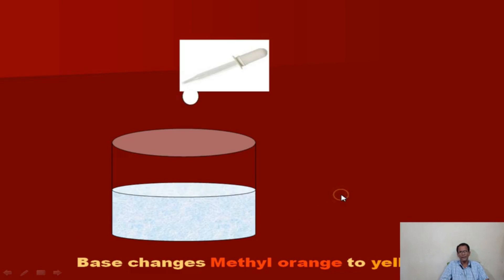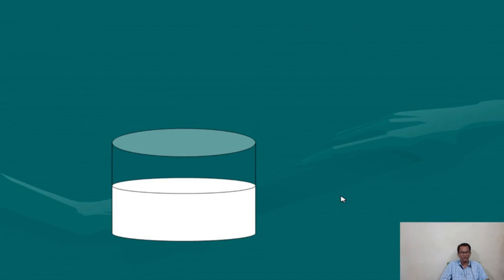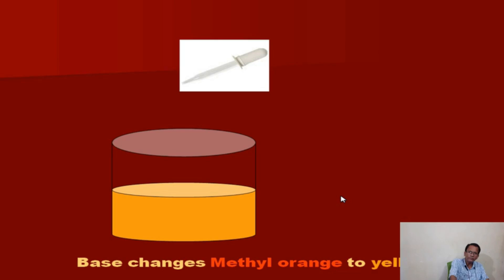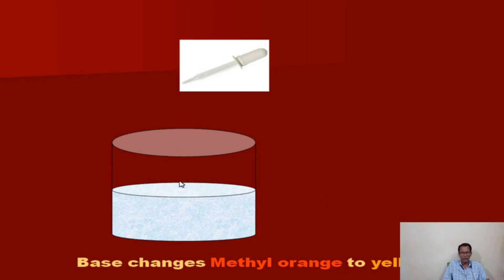Like acids, if you take a base and add methyl orange to it, the result is a yellow color — a yellow solution is formed. That means base changes methyl orange to yellow. This is one important property of base.